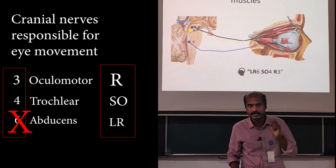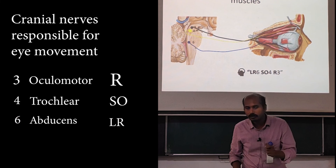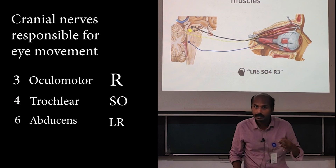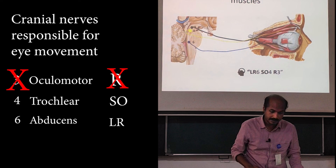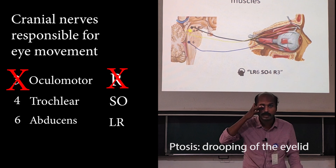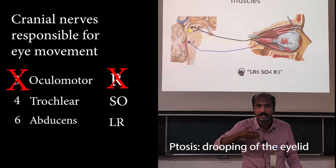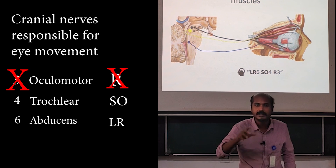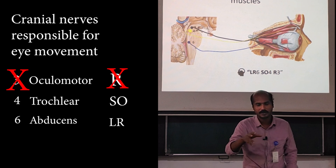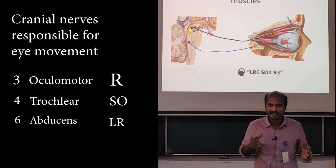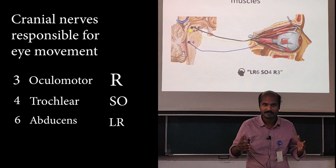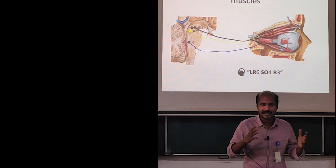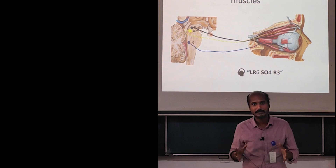So if the sixth nerve is injured, you will have a lateral rectus palsy. If the fourth nerve is injured, you can have a superior oblique palsy. If the third nerve is transected, you can have LPS palsy — very important. The patient will have a complete ptosis or drooping of the eyelid, and all other extraocular muscles will be denervated except the lateral rectus and superior oblique. You can work out each of these scenarios and the deficits they produce by understanding this basic anatomy of the extraocular muscles.